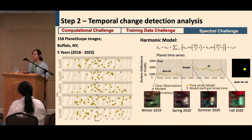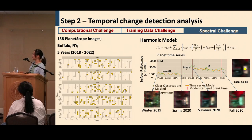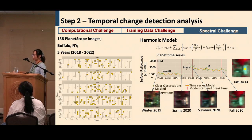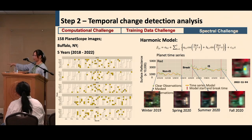In the next step, we detect the change time for those changed pixels. We acquired 158 PlanetScope images for Buffalo within a five-year time interval. We used the harmonic model to detect the breakpoint, which represents the change time. As shown on the figure, this model can detect the change time very well.